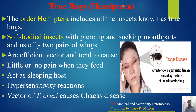True bugs are included in the order Hemiptera. The order Hemiptera includes all the insects known as true bugs — soft-bodied insects with piercing and sucking mouthparts, and usually two pairs of wings. These are efficient vectors that tend to cause little or no pain when they feed. They act as a sleeping host, create hypersensitivity reactions, and most importantly, act as the vector of Trypanosoma cruzi, which causes Chagas disease, as observable in this female patient.